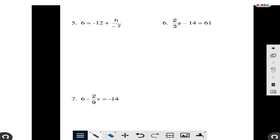Okay guys, so for this problem, number 5, the first thing we do is to get rid of the number next to the variable, so it's going to be adding 12 to both sides.